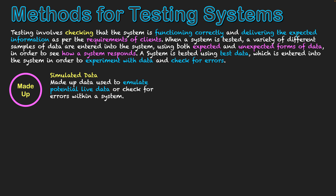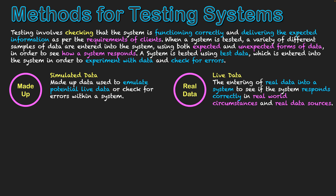Next is the live data test. This is when we are using real-world data — we put the system into a real-world scenario and enter real data from real sources, such as real users of the system. This might mean putting it on a network where multiple users are accessing it. How is the system responding to real data coming from real data sources? It is the real test of the system, seeing how it works in live conditions.